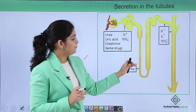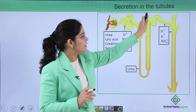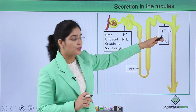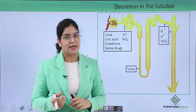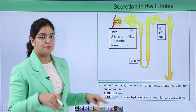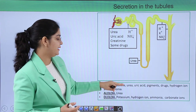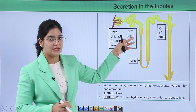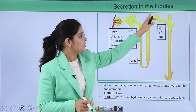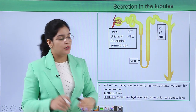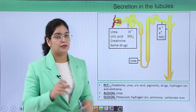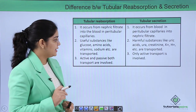In the loop of Henle, only urea is secreted. In the distal convoluted tubule and the collecting duct, hydrogen ion, potassium ion, and ammonia are secreted. To revise: PCT secretes creatinine, urea, uric acid, some drugs, hydrogen ion, and ammonia; loop of Henle secretes urea; and the distal convoluted tubule and collecting duct secrete hydrogen ion, potassium, and ammonia.